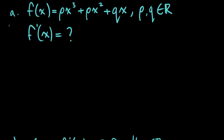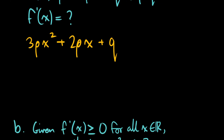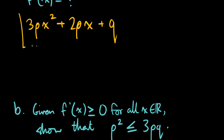On to the second question, which asks us to find the derivative of this function in terms of x, p, and q, where p and q are constants. We can still use the power rule here — we'd move the 3 down and subtract 1. So we'd have 3 times p times x squared plus 2px plus q, since this x goes to 0. That would be our derivative for this function.